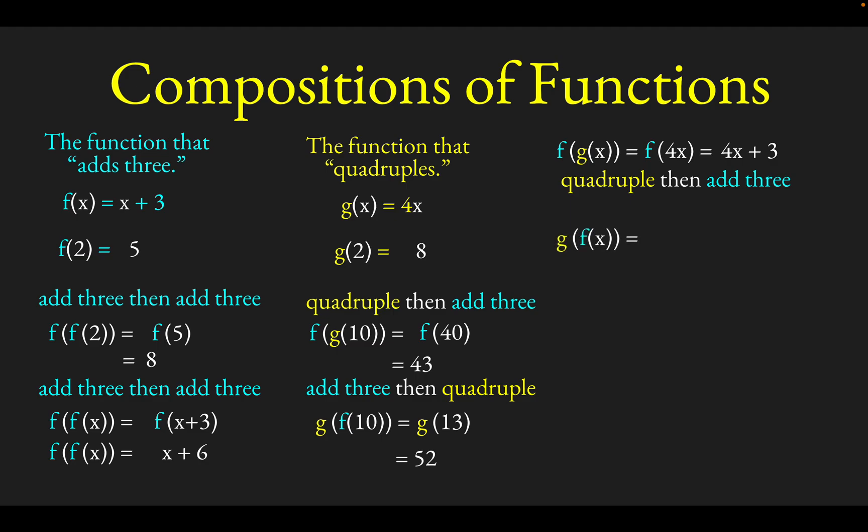We might think about switching the order and doing g of f of x. This is going to add 3 and then quadruple the result. So if we add 3 to x, you get x plus 3. Then g is the function that quadruples, so we need to quadruple the entirety of x plus 3, giving 4 times the quantity x plus 3. Distributing the 4, we end up with 4x plus 12.